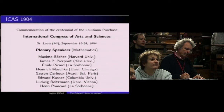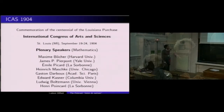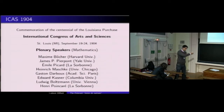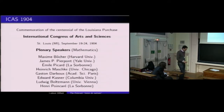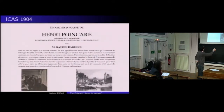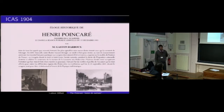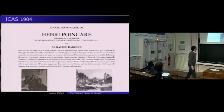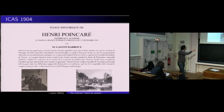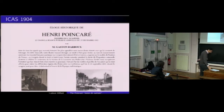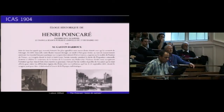Poincaré a donné un exposé dans le cadre de la conférence AMS portant sur les lignes géodésiques des surfaces convexes. Une semaine plus tard, le samedi 24, il donnait un deuxième exposé, plus grand public, intitulé « L'état actuel et l'avenir de la physique mathématique ». C'est dans cet exposé qu'il a employé l'expression 'principe de relativité', parlant de ce qui pourrait être fait en physique — un an avant le papier célèbre d'Einstein de 1905.